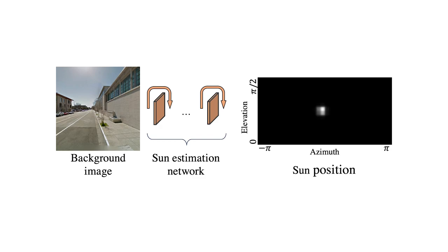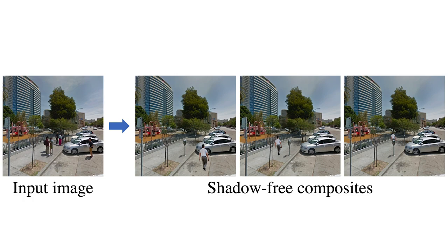We further use an estimated depth map and an estimated ground segmentation map to infer the geometry of the scene. The inferred geometry is used to determine the scale and occlusion order for newly inserted objects.